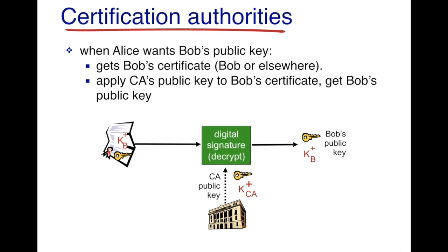Trudy was able to play the prank on Bob because she sent the pizza store her public key and claimed it was Bob's. When you have a certification authority, you can always get the certificate from the CA and apply the CA's public key to obtain the public key of the particular individual. Thank you for listening.